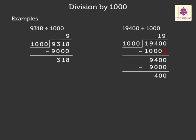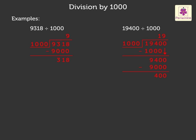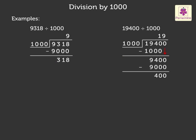Next is division by one thousand. Look at the board. We have solved two examples by division method. Look at the first example: nine thousand three hundred eighteen divided by one thousand. Here, we got the quotient as nine and remainder as three hundred eighteen.